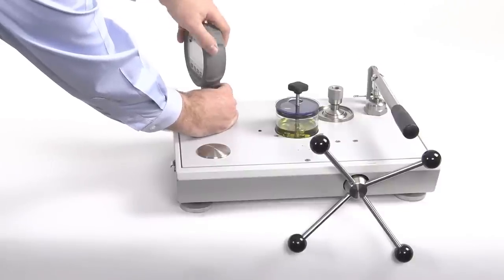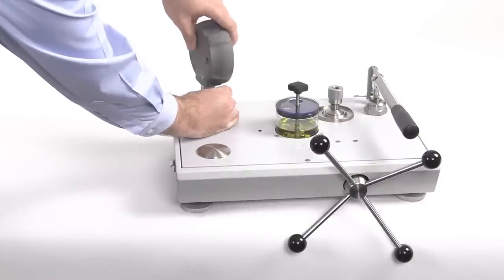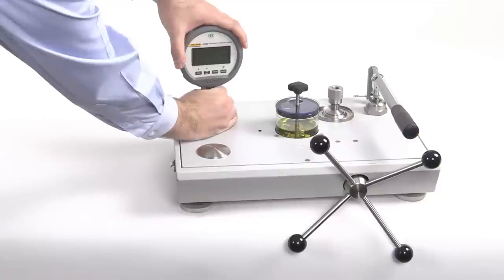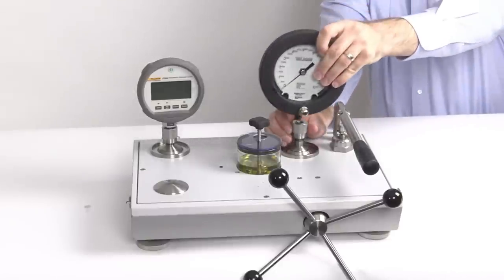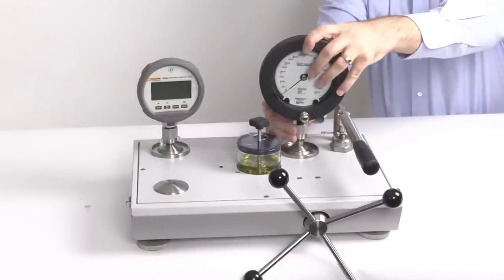The reference gauge can then be attached to the adapter. The gauge and adapter can then be adjusted so that they are facing forward. The device under test is attached in a similar manner.